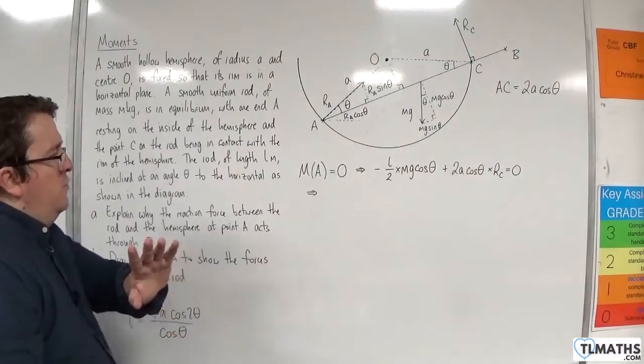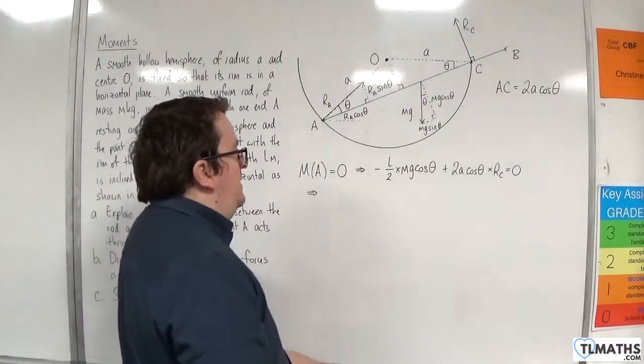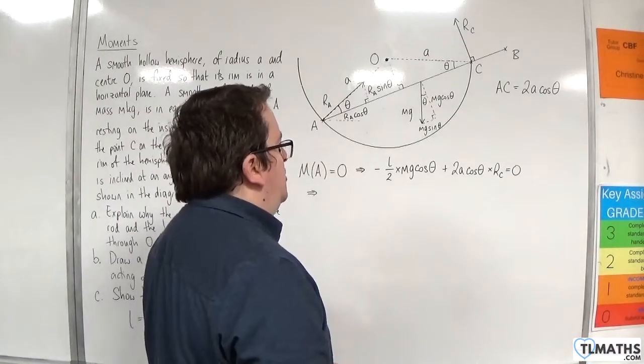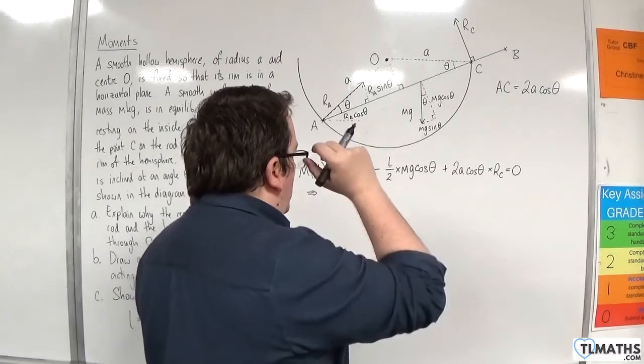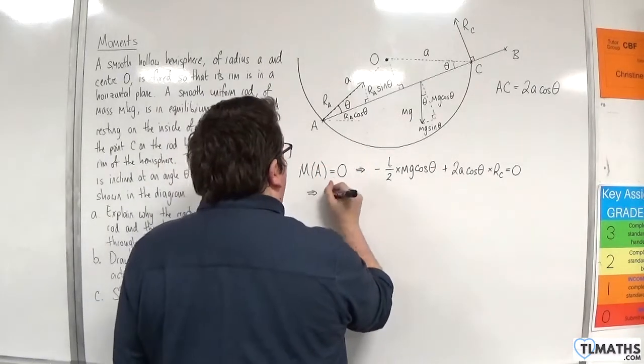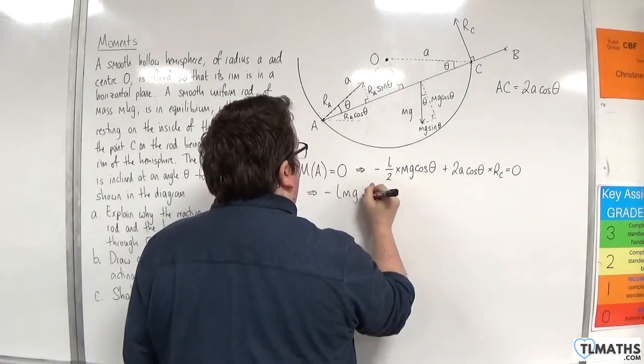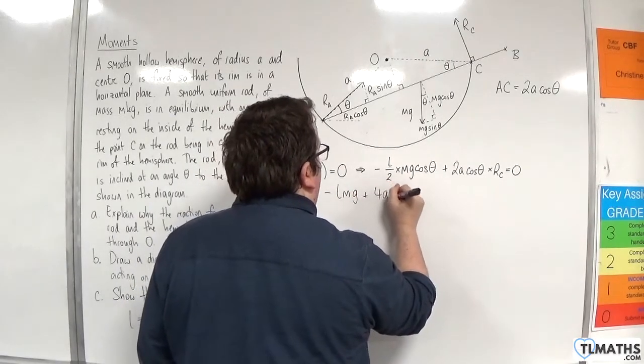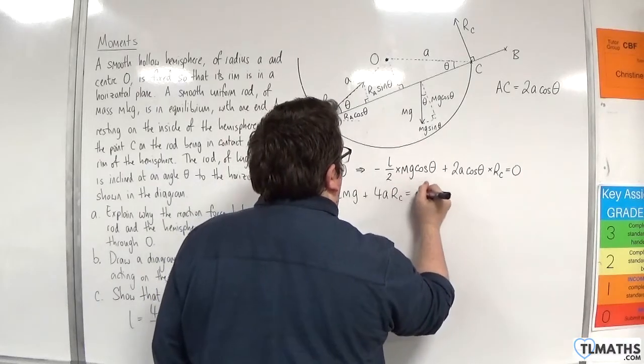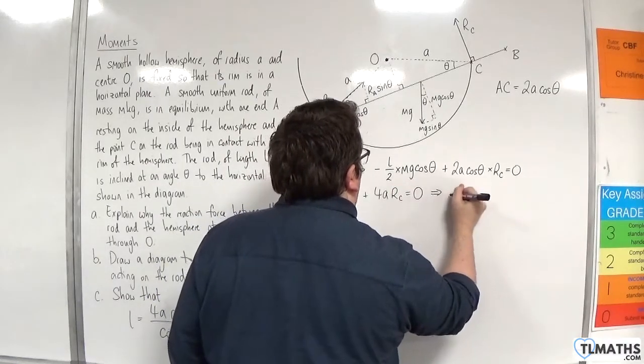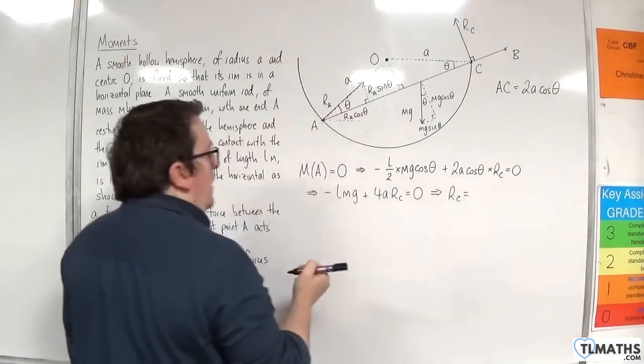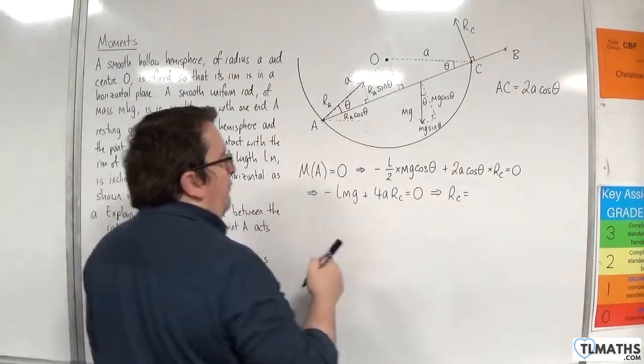Now I can divide through by the cosine theta and multiply through by 2. And we're going to get minus L M G plus 4A RC equals 0. So RC will be L M G over 4A.